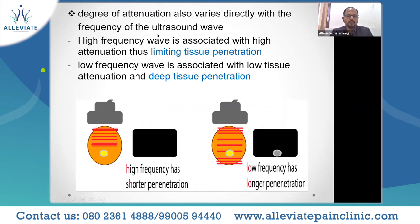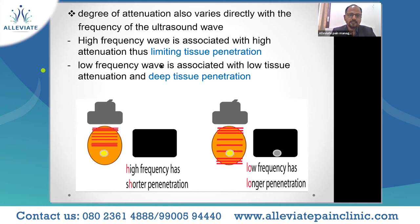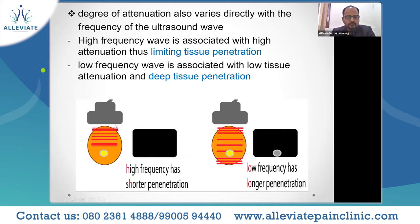The degree of attenuation also varies directly with the frequency of the ultrasound wave. Higher frequency means higher attenuation coefficient, thus limiting tissue penetration. Conversely, low frequency is associated with less tissue attenuation and less absorption, allowing penetration into deeper tissues. For example, if the target is way beyond 4 centimeters and you use a linear probe (high frequency), it will get attenuated and you won't visualize the structure. If you use a curvilinear probe (low frequency), penetration is better and you are able to visualize it.